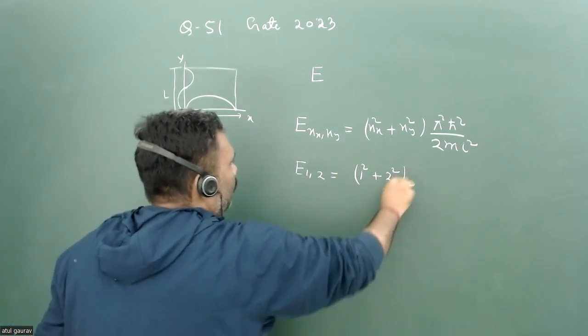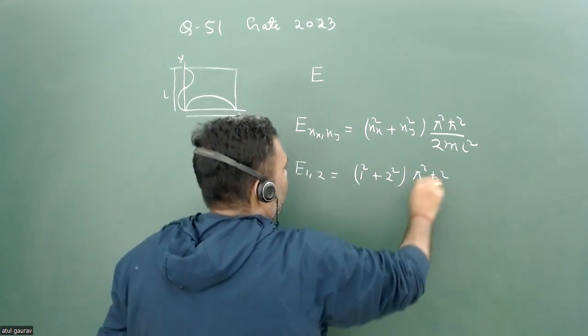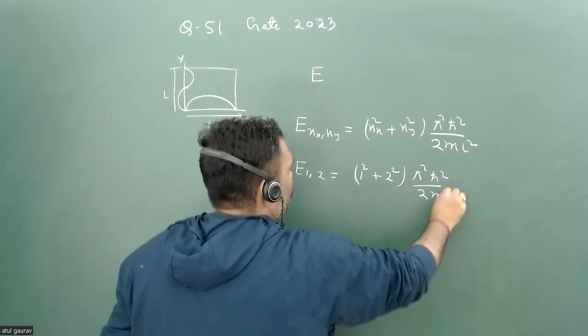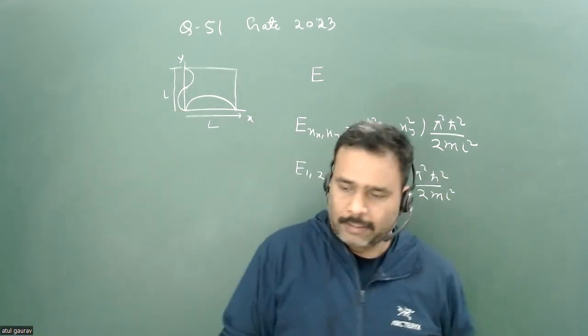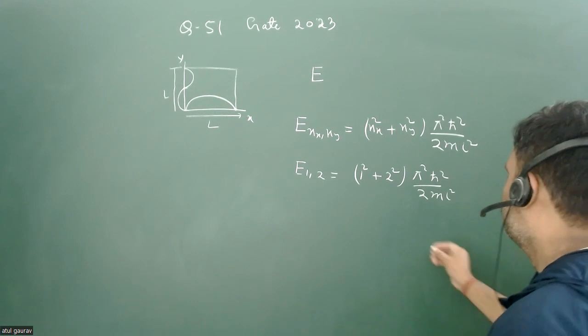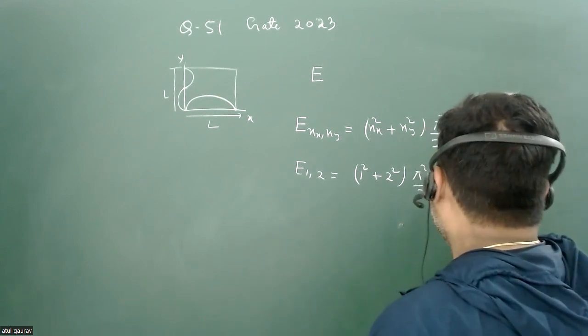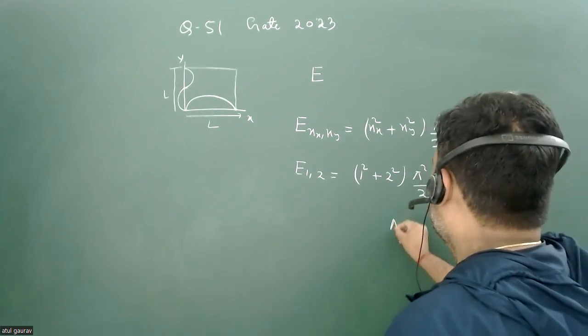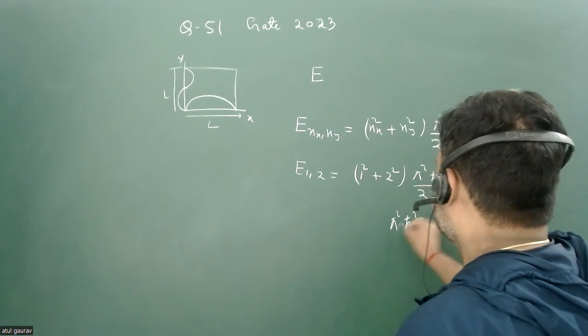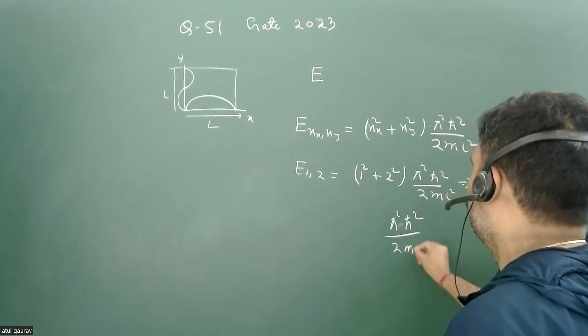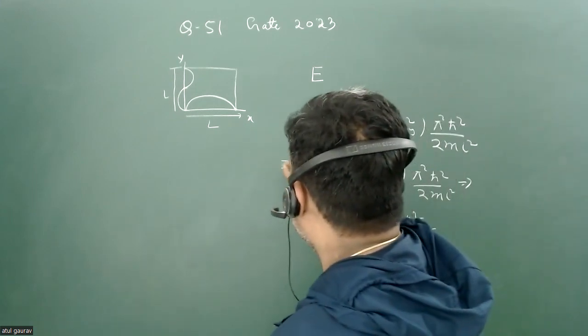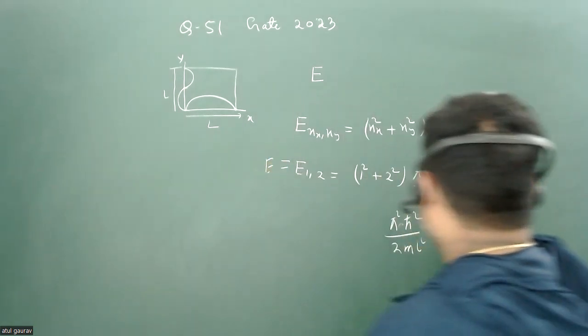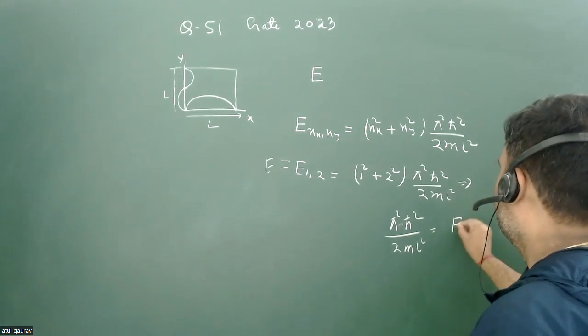So from here we can easily find the parameter of pi square h-bar square upon 2mL square. So this can be given by pi square h-bar square upon 2mL square is equal to... and this value is given E, so this value is equal to E by 5.